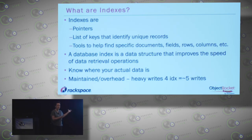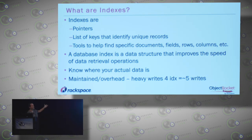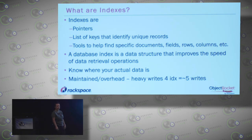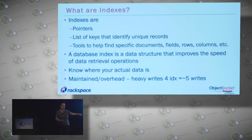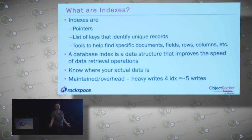Basically, indexes are pointers. If you want to boil it down, they're references to another location. A database index is a data structure to improve the speed of data retrieval. You want to find the fastest way to get to your data. In MongoDB and all NoSQL databases, you tend to have a lot more data. We're here about speed, so you want your indexes to be as lean and efficient as possible. The indexes and pointers know where the data are — you don't.